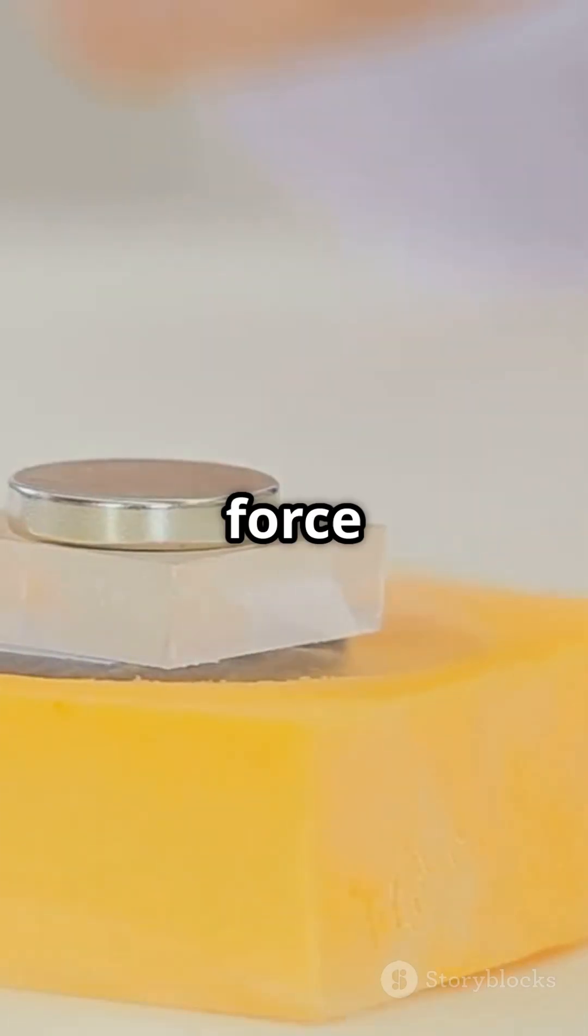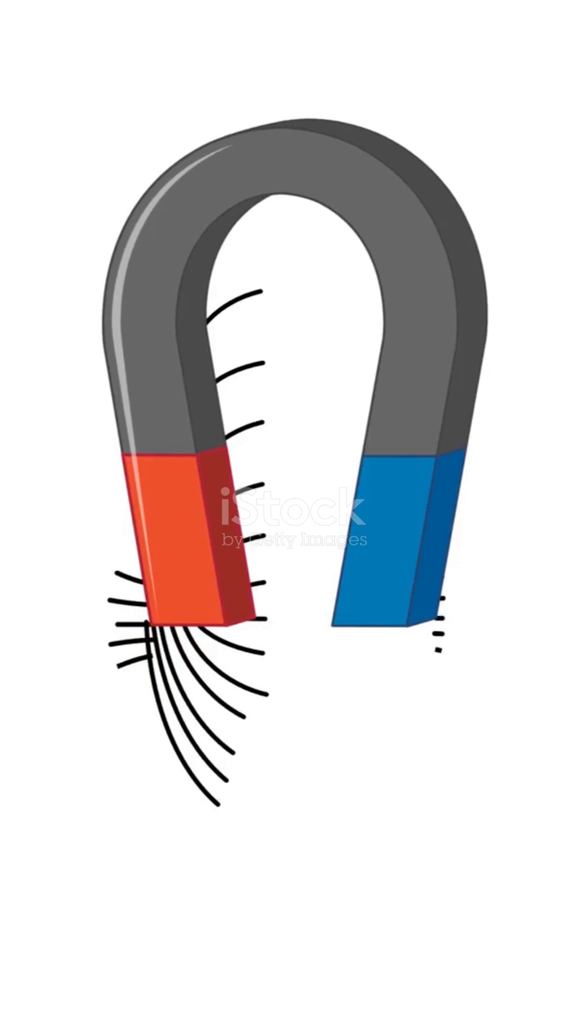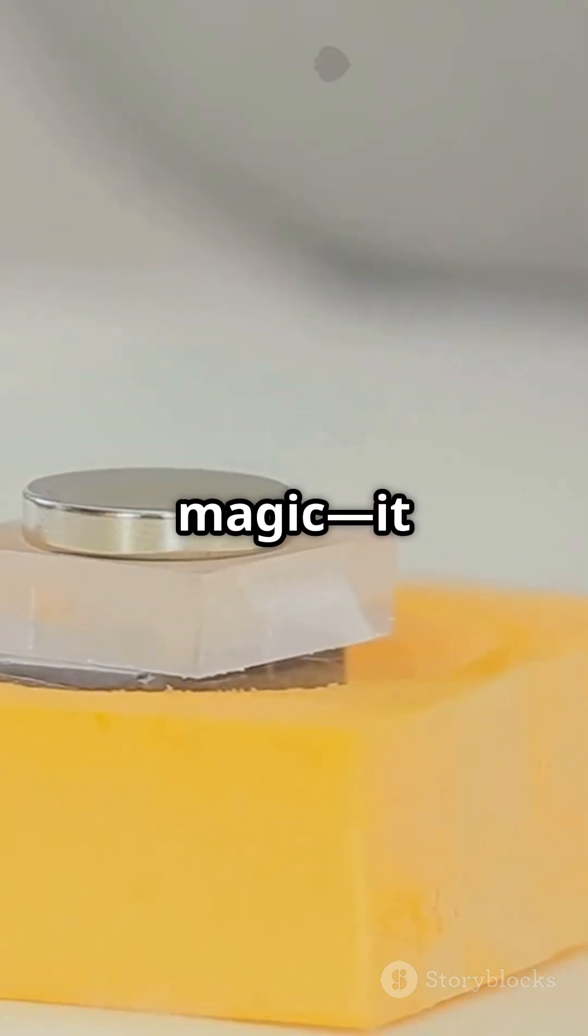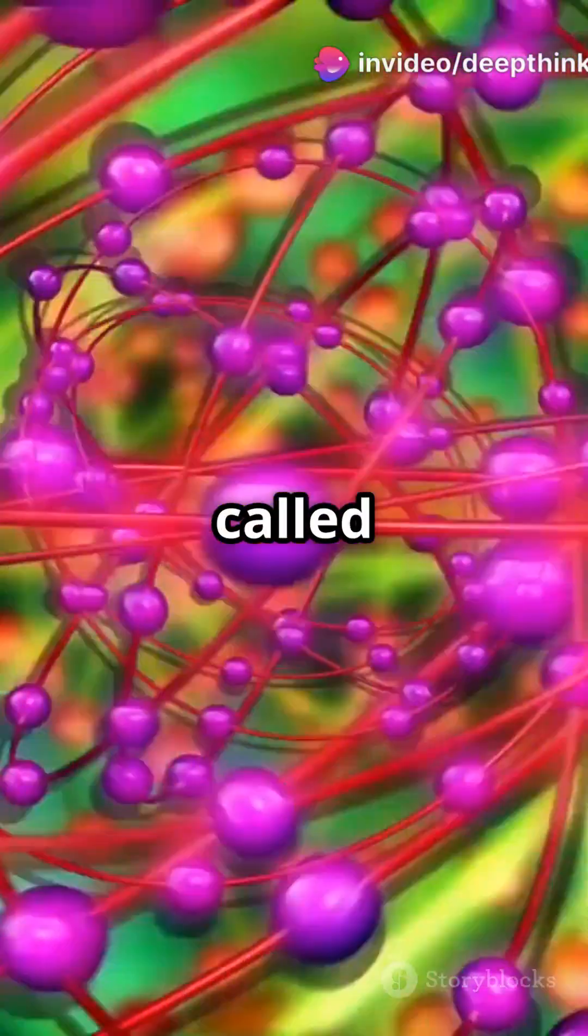A magnet creates a mysterious force we call a magnetic field. But this force isn't magic. It all comes down to tiny particles called electrons.